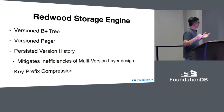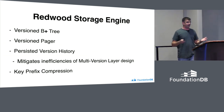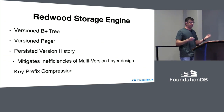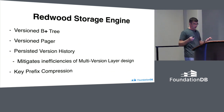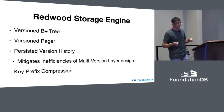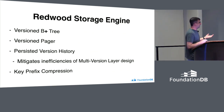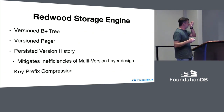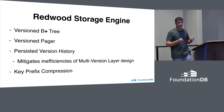This brings me to the Redwood storage engine. It's a versioned B+ tree on top of a version pager. It persists version history but mitigates the inefficiencies of the multiversion layer design. And of course it has key prefix compression, which I'll talk about in more detail later.